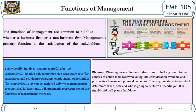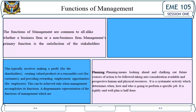Functions of management. The functions of management are common to all, whether a business firm or a non-business firm. Management's primary function is the satisfaction of stakeholders — typically involving making a profit for shareholders, creating valued products at a reasonable cost for customers, and providing rewarding employment opportunities for employees. This can be achieved only when management accomplishes its functions.